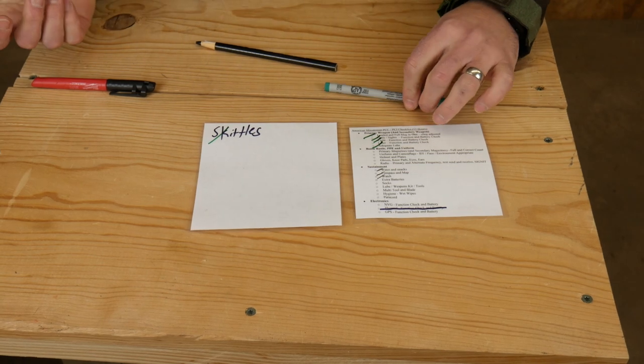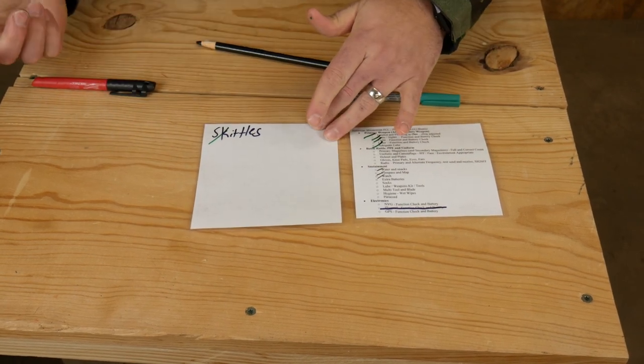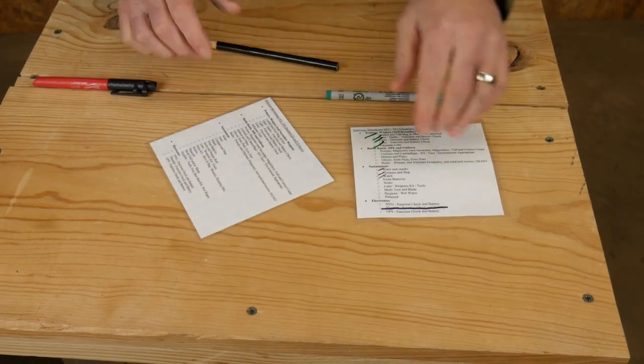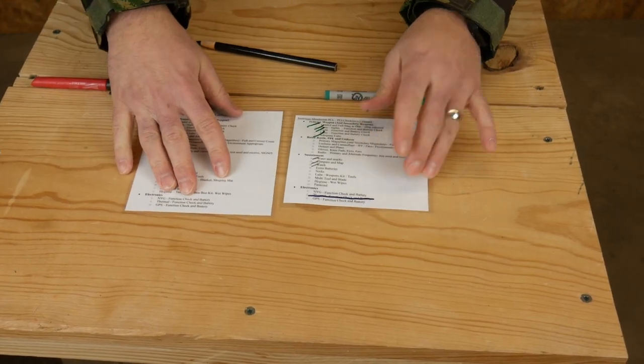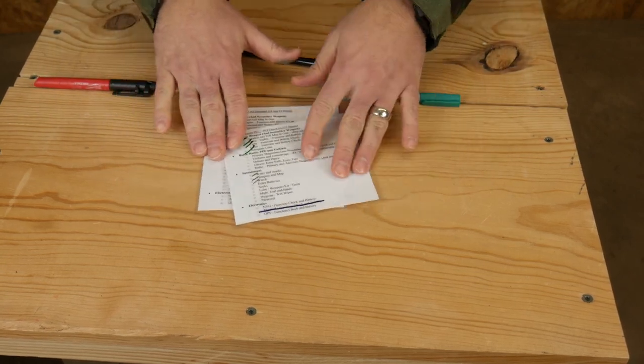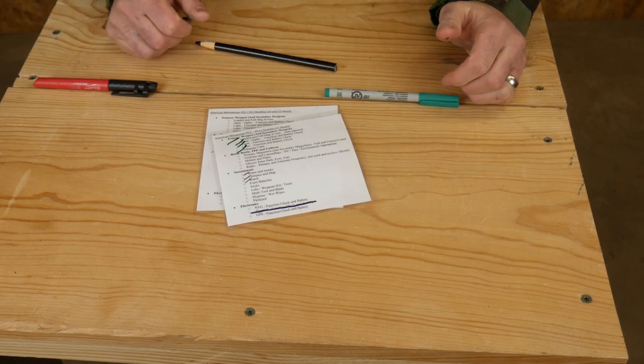And then when you're all done, you'll erase that. Permanent marker will stay and the wet erase marker will go away. So I tried to make these as versatile as possible. They're going to come in a pack of two, with the 12-hour and the 24-hour together. So one order, you're going to get both of them sent over to you.